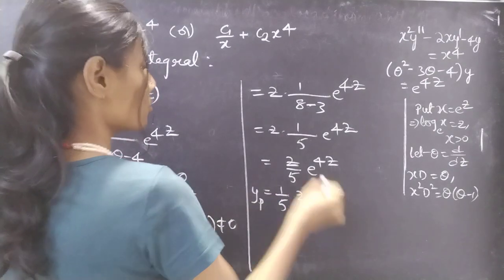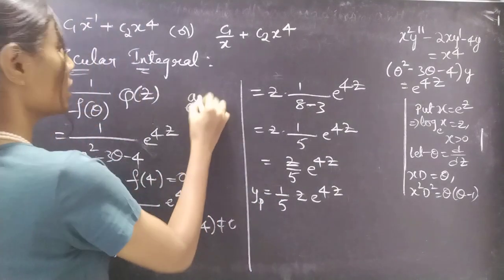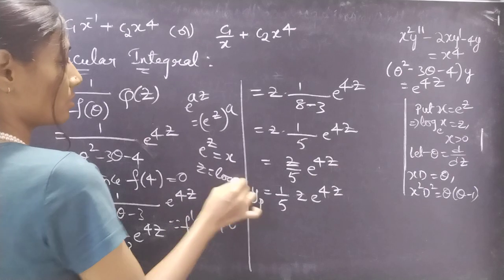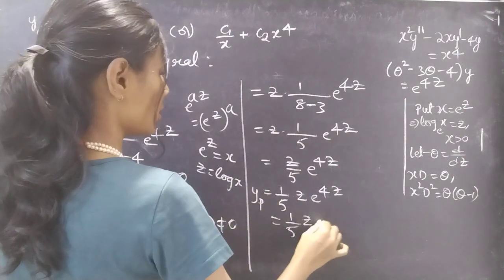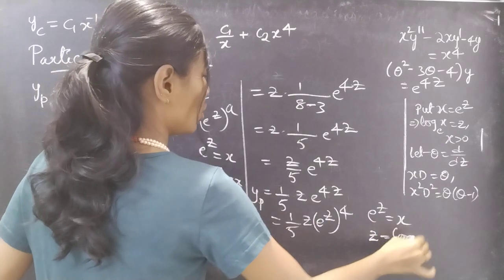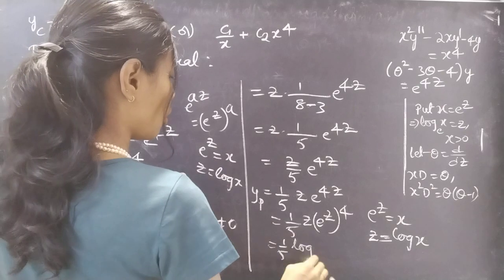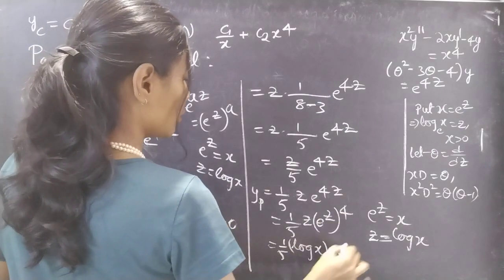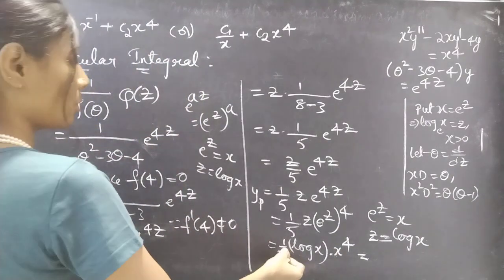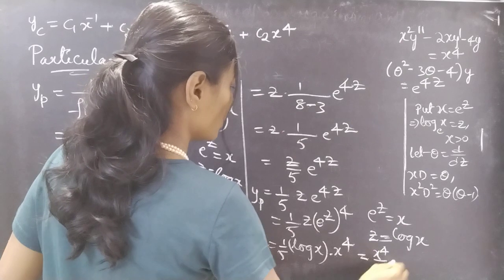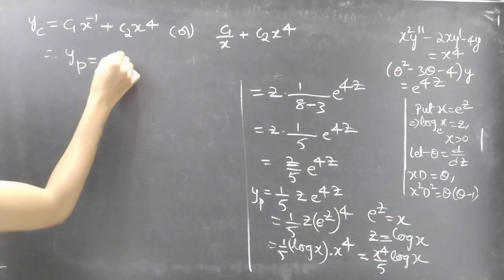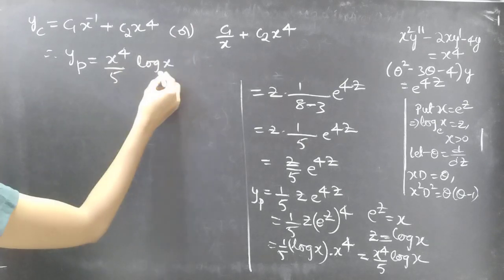We are having yp in terms of z, but we need it in terms of x. We write e^(4z) as (e^z)⁴, then replace e^z by x and z by log x. We get yp equals (1/5)·log(x)·x⁴, which equals x⁴·log(x)/5. This is our required particular integral.